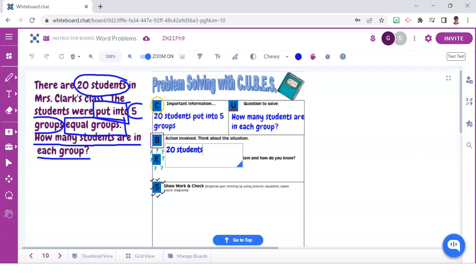Those signal words are important because it helps us to see that the 20 students were separated, and being that they were separated into equal groups, that lets us know that division will be needed to solve for this problem.